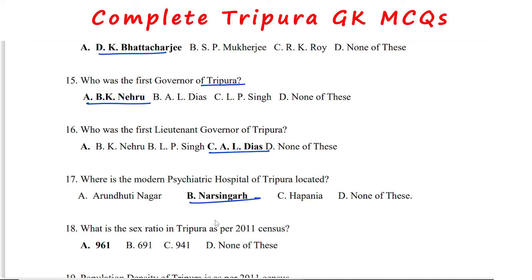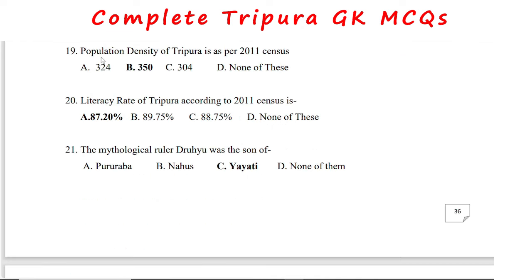The sex ratio in Tripura as per the 2011 census is 961. The population density of Tripura as per the 2011 census is 350 per square kilometer. The literacy rate of Tripura according to the 2011 census is 87.20%.